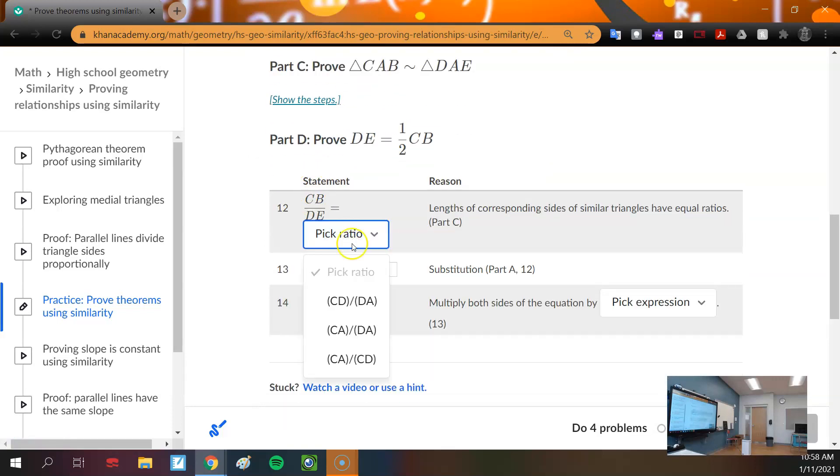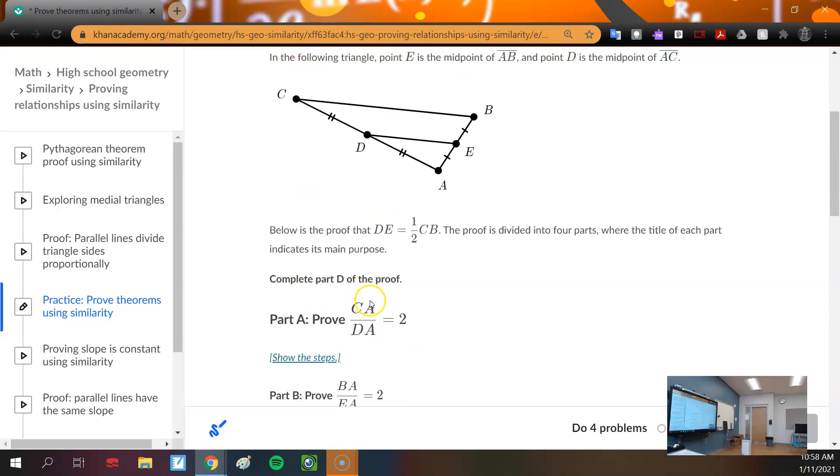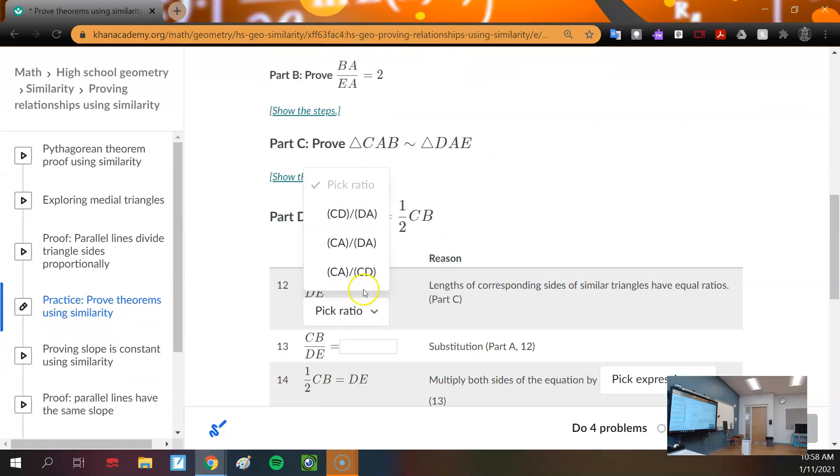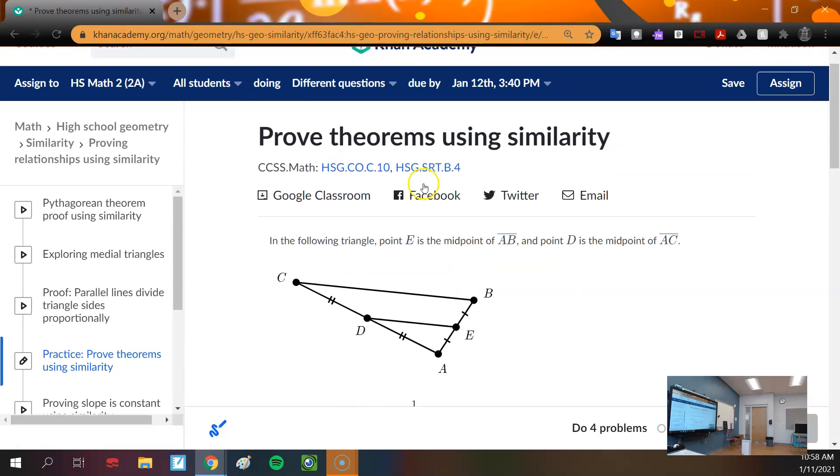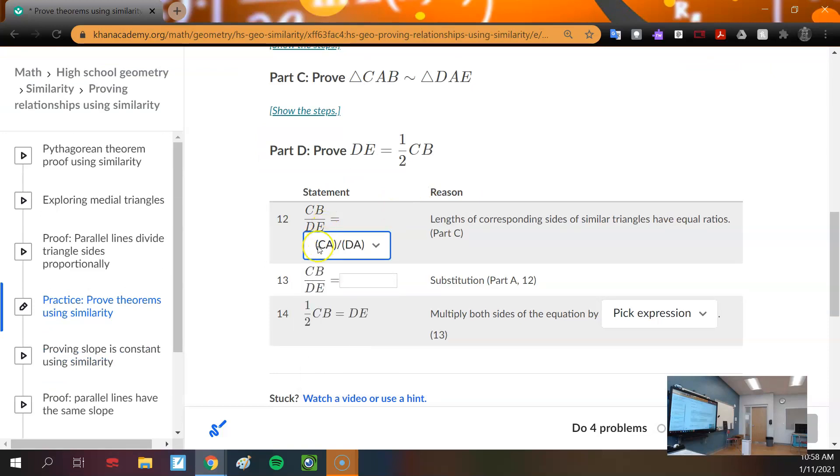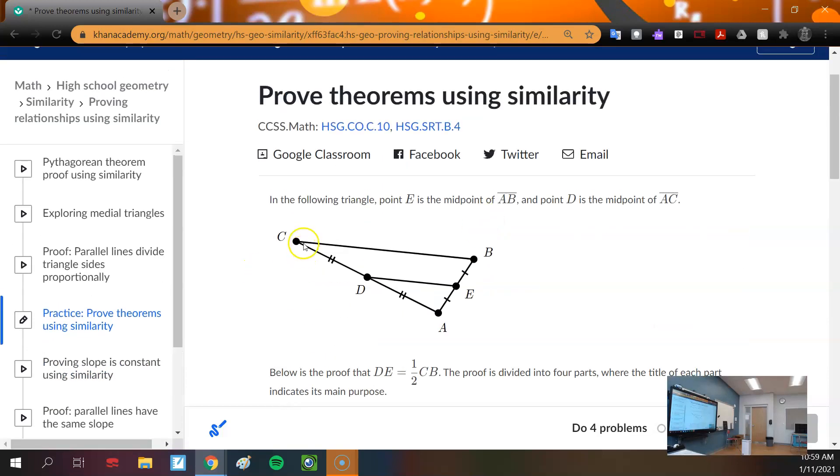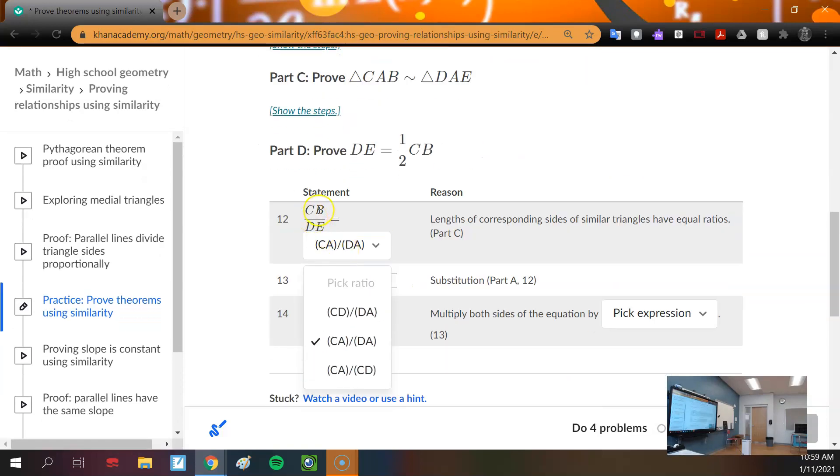So we want big over small. Which one of these is big over small? CA is the big triangle. The corresponding piece of the little triangle would be DA. So if we say CA, then we need DA. That's why we would mark CA over DA.